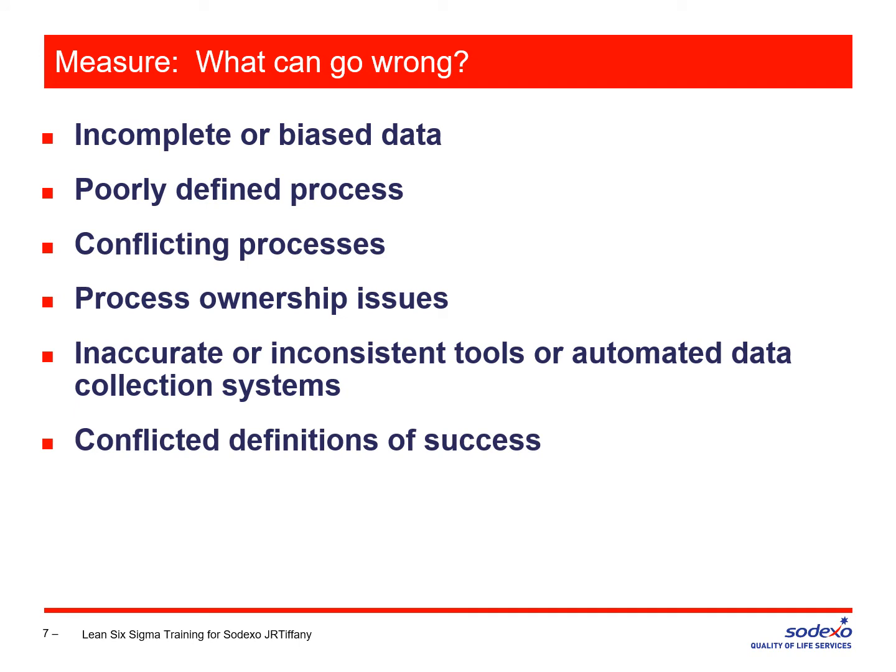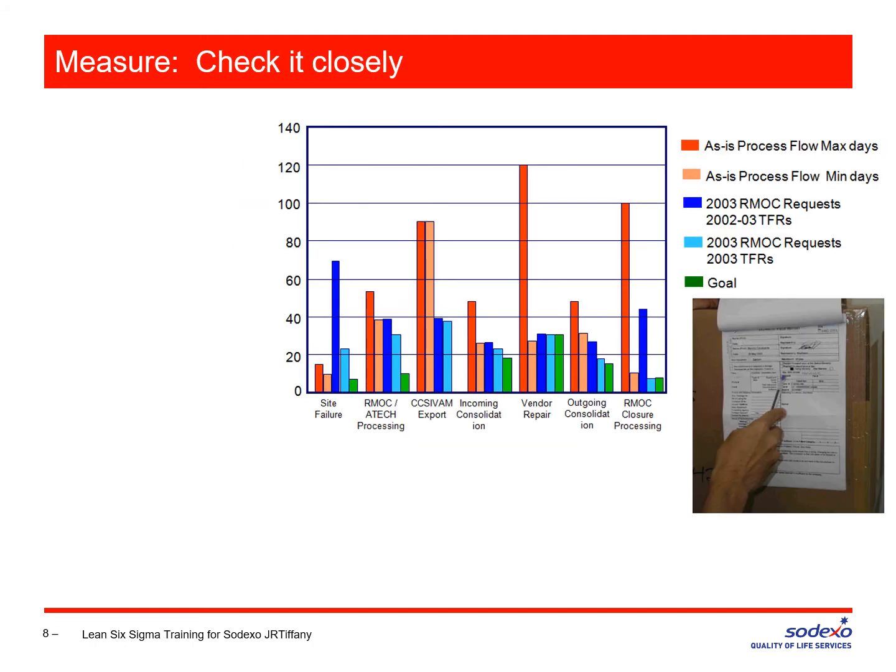In the measure step, you define the metric you're going to use that will say you're actually done. Remember how in the define step you were defining the exit criteria or exit criterion? You have to have a way to accurately define that point. What is success? There should be only one definition of success in your project.